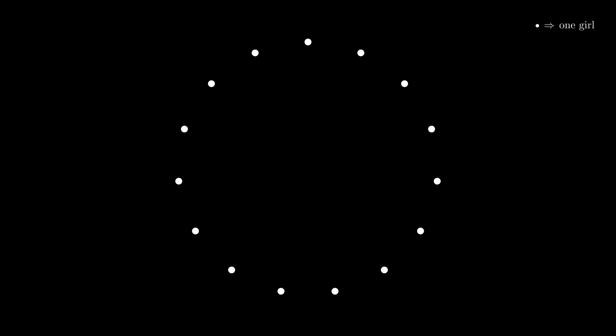Graphs are very useful since the nodes and the edges can denote something related to a specific problem. In our case, every node represents a girl and an edge means that they stay on the same row in a given day. Every day will have a different color.